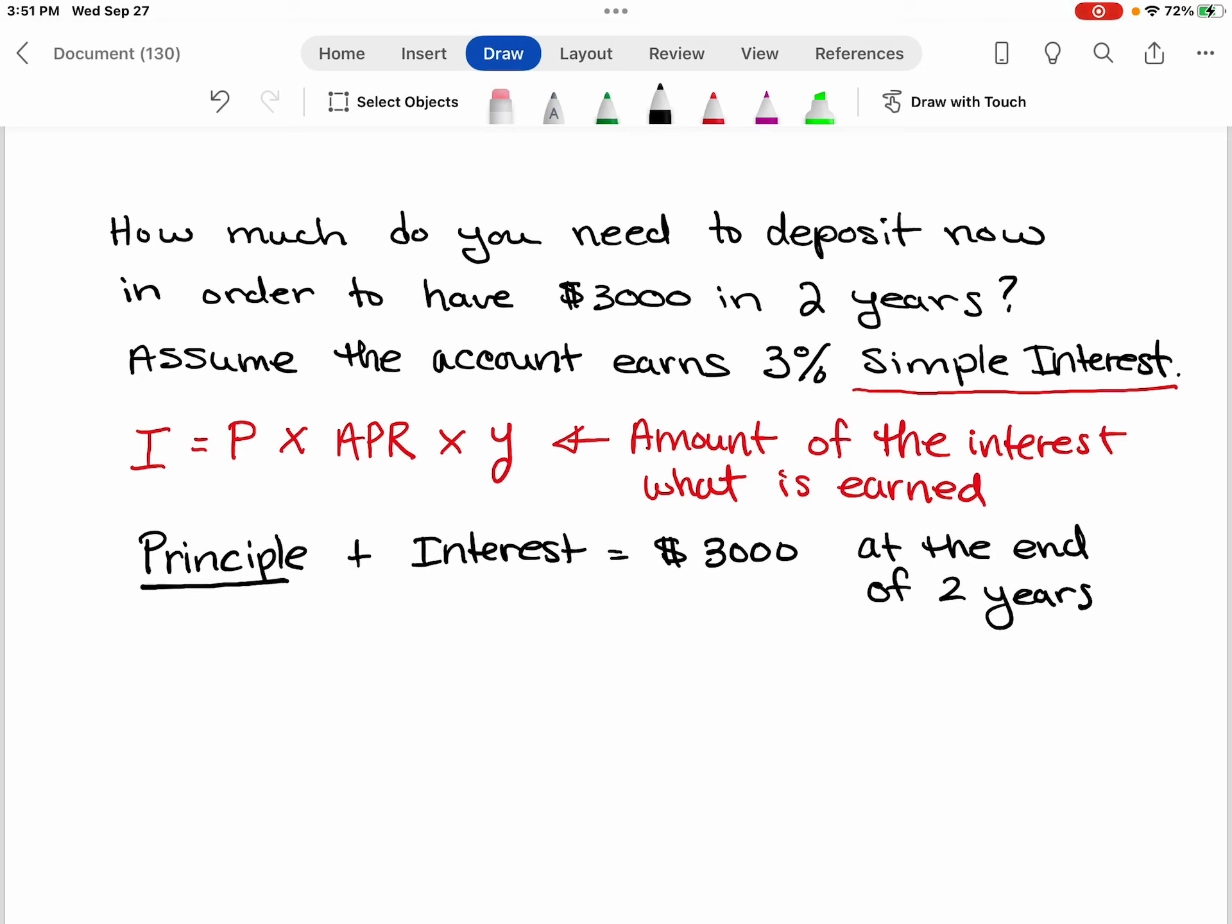The principal is what we're trying to solve for. We don't know what the interest is, but we know that in total we want them to be $3,000. We know what the formula is for the interest, so I'm going to put that in here.